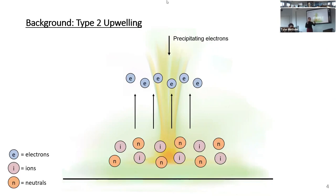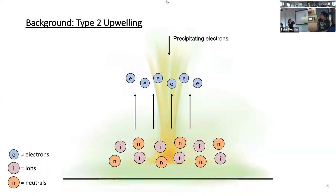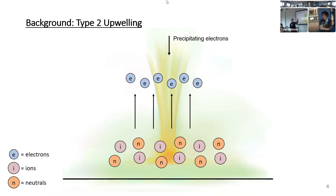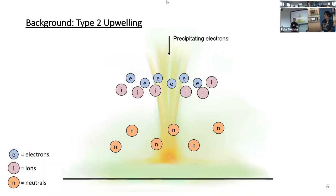For a demonstration: type 2 upwelling works because precipitating electrons come in, follow the field line, and come down into the plasma filled with ions, neutrals, and electrons. What heats up and moves first are these electrons — they come out of the plasma and rise in altitude. Now you have a charge discrepancy where the electrons are up at higher altitude but the ions are lagging behind, still lower, creating an ambipolar electric field. The ions then want to follow, and that is ion upwelling — that's what we mean by type 2 ion upwelling.